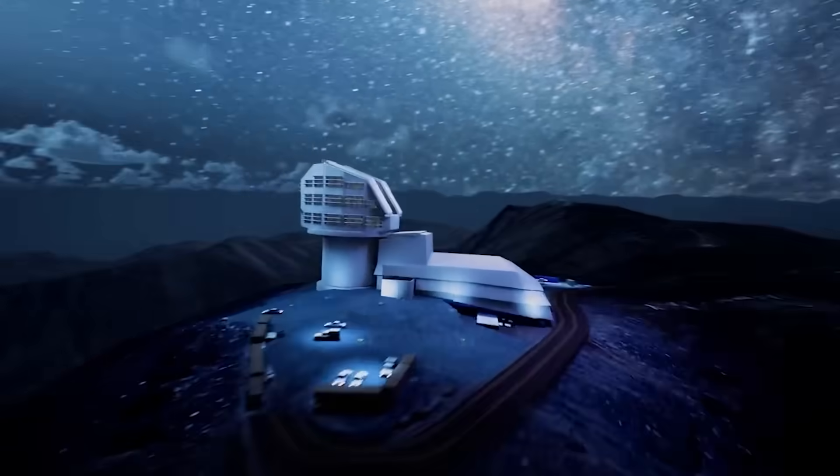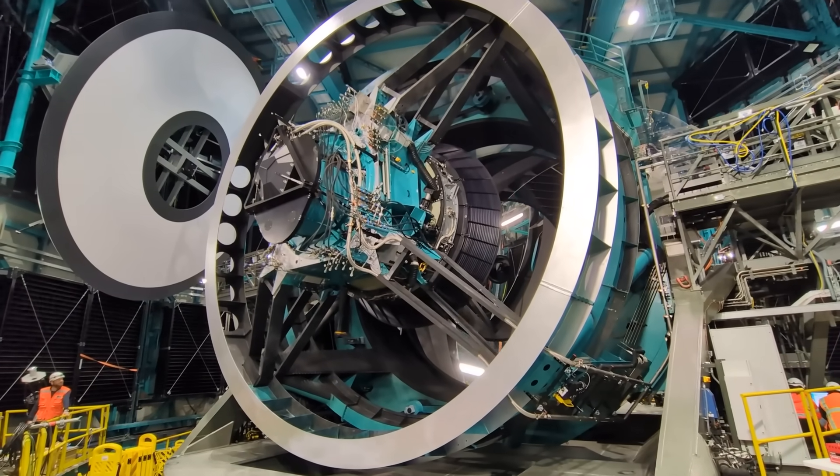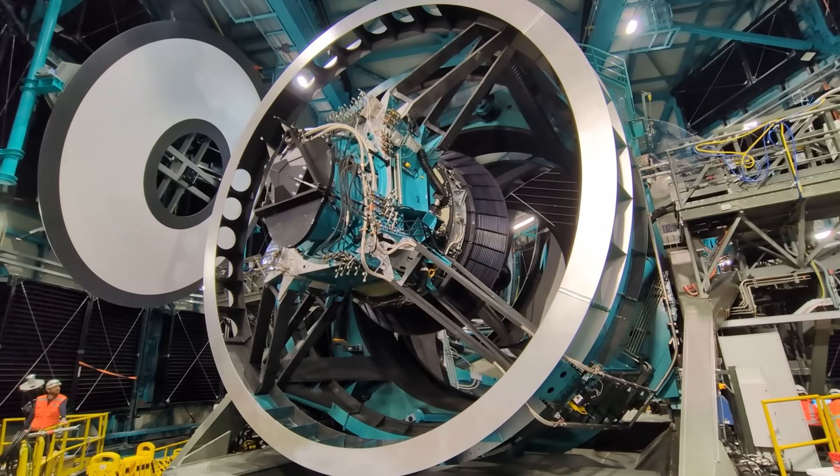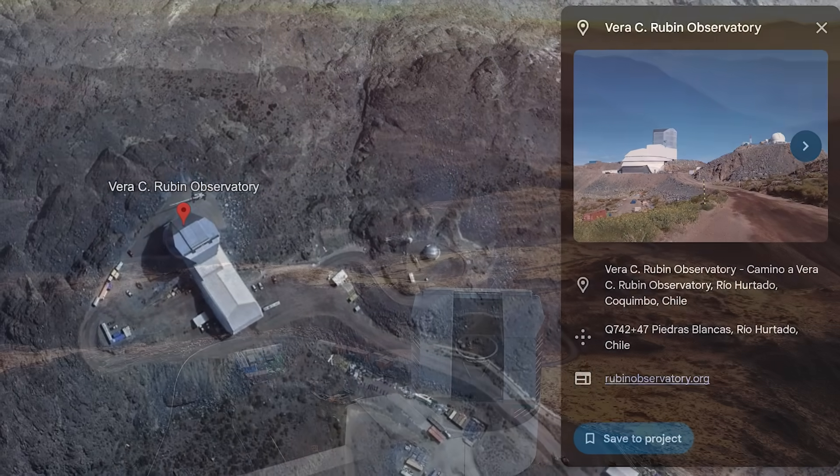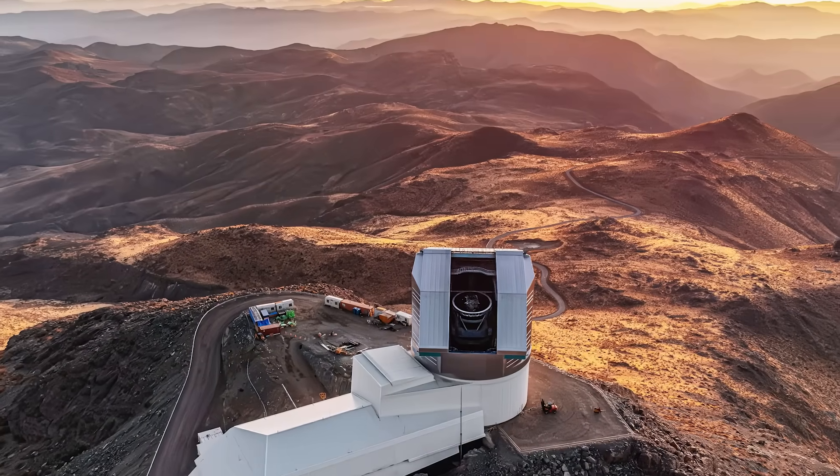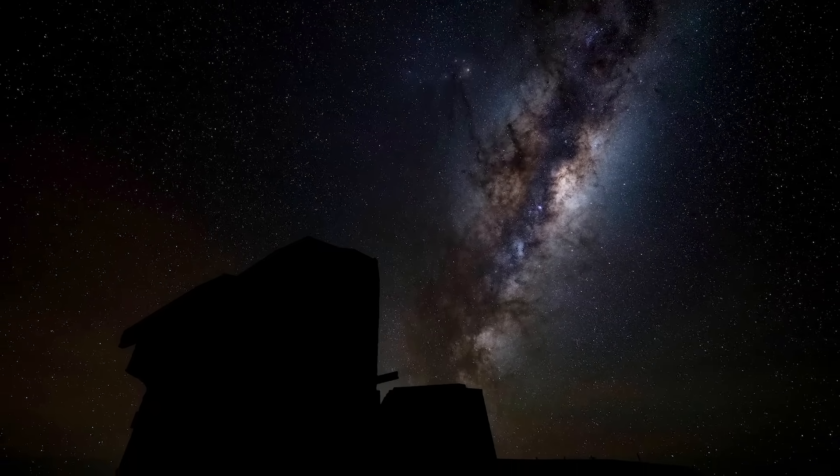This is the Vera C. Rubin Observatory. It's a big-ass telescope, but it's unlike any other telescope we've seen before. Located in the Atacama Desert in the northern part of Chile, Rubin sits high above the clouds on a rocky mountain top, where the air is dry and the skies are among the darkest on Earth.